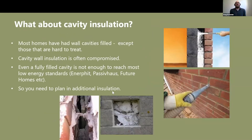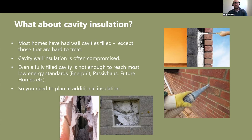Moving on to cavity insulation — most homes will now have had some cavity insulation, typically blown either as fibre or beads. A contractor inserts that between the internal wall leaf and external wall leaf. Problems can arise if the cavity hasn't been cleaned — mortar droppings or wall ties can restrict the even spread of insulation in your wall.